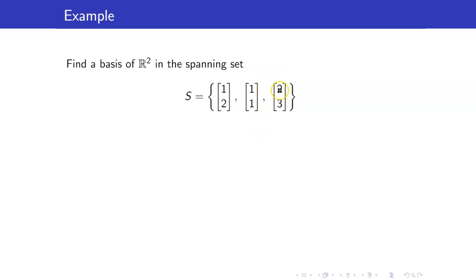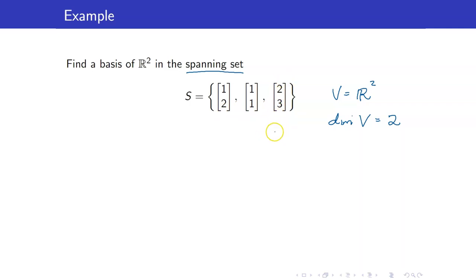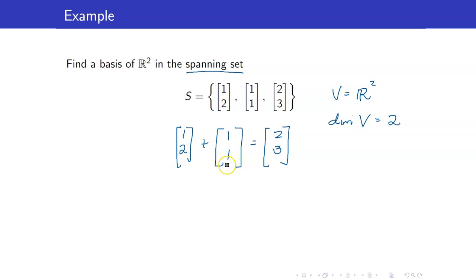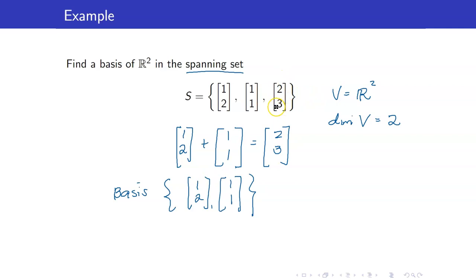Let us consider this example. We have the vectors (1, 2), (1, 1), and (2, 3). It is already given that this is a spanning set for V, which in this case is R2 — the dimension is equal to 2. Hence, we know that this is not a basis; we have to delete one vector. Notice that the third vector (2, 3) is just the sum of the first two vectors. Hence, since it is just a linear combination of your first two vectors, a basis would just be {(1, 2), (1, 1)}. We can delete this redundant vector since it is just a linear combination of these two.